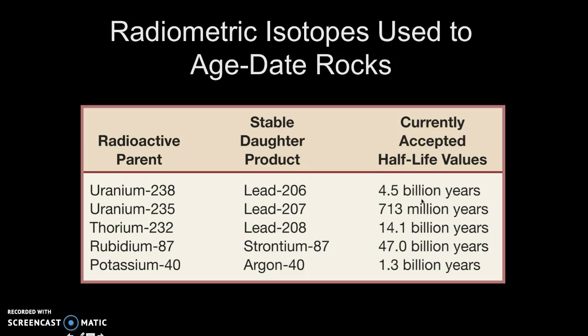We use different isotopes to age-date different types of rocks and that's because when we're age-dating the rocks, we're actually age-dating individual mineral grains and it's important to note that not all minerals contain all of the elements that you see in this listing.